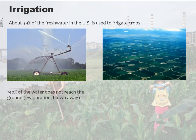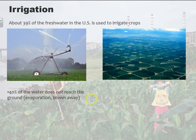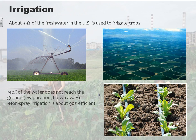We've talked about irrigation in another lecture, but just to reiterate: this is center pivot irrigation — a big machine that moves around in a circle. About 40% of the water does not reach the ground because it's blown away. Whereas non-spray or drip irrigation is about 90% efficient. It's all connected — pretty much all these sustainability issues in some way, shape, or form are connected to each other.